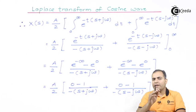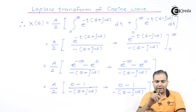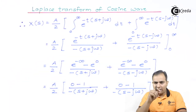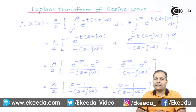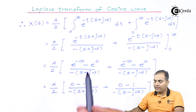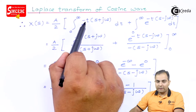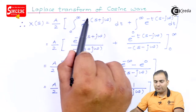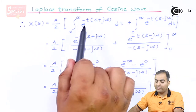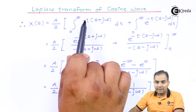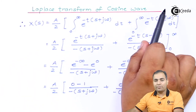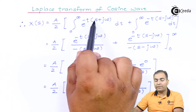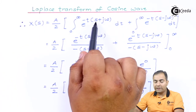I solve each integration separately from 0 to infinity: the first part has e^(jωt)·e^(−st) and the second has e^(−jωt)·e^(−st). Since the bases are the same, the powers are added. Taking minus t common from the brackets, in the first part we get −(s − jω)t and in the second part −(s + jω)t. Taking minus t common means both minus signs are factored out and the terms become positive.